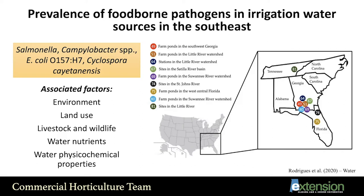There are associated factors that can increase the prevalence of these pathogens, such as environmental factors, weather, temperature, seasonality, land use, livestock and wildlife, water nutrients such as nitrogen, and water physical-chemical properties such as conductivity and pH. Looking at this map, most of the research done in the past was concentrated in Georgia and Florida, but we have very little information on pathogen prevalence in agricultural water in Alabama — mostly for water used to irrigate fruits and vegetables.